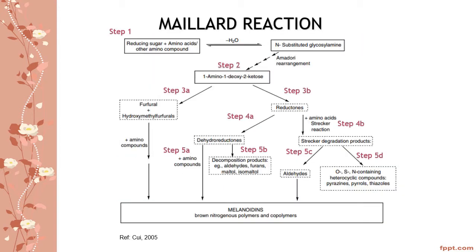Looking at this figure, this is a summary of the Maillard reaction that occurs in foods. I have put some different steps so we can refer to them when discussing this reaction. In step one, reducing sugar is reacted with amino acids or other amino compounds and causes the loss of water because it is at high heat — when there is high heat, water evaporates — and it forms a substituted glycosylamine.